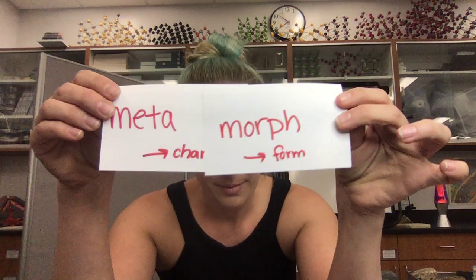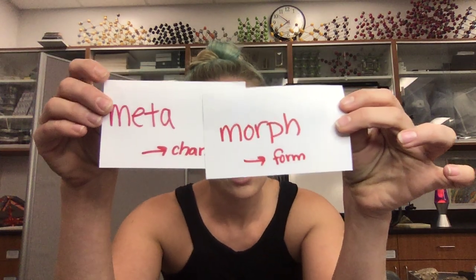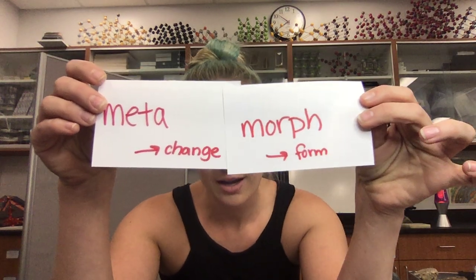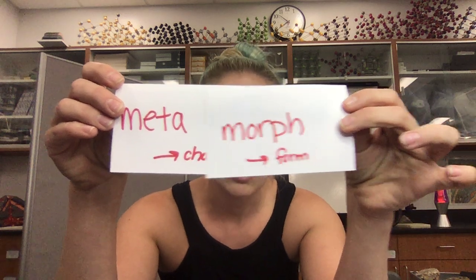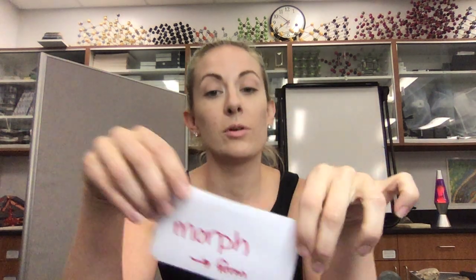Our last rock group this week are our metamorphic rocks. The word metamorphic comes from 'meta' meaning to change and 'morph' meaning the form or the shape. So when something is metamorphosed, it's just changing the shape or form of an existing rock.